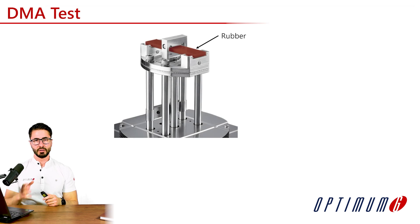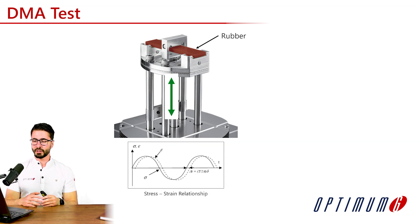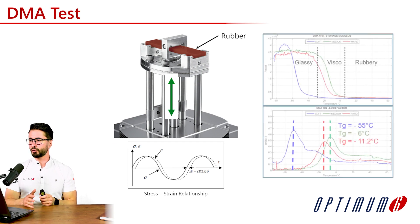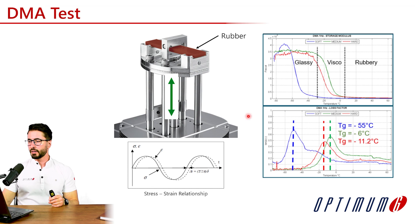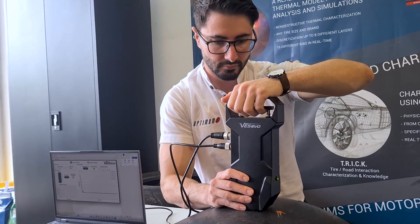A conventional way to measure these viscoelastic properties is through DMA testing. We need a sample of the material — for example, the rubber from the tire — and the rig will characterize this rubber at different temperatures and different frequencies. We are measuring the stress, or the force, the strain, or the deformation, and we are analyzing also the phase between them. With that, we are able to characterize the two properties we discussed: the storage modulus and the loss factor. This can be done for soft, medium, or hard materials. The disadvantage of this test is, number one, you have to do it in a lab, and number two, it's a destructive test — you need to destroy your tire to create this sample.